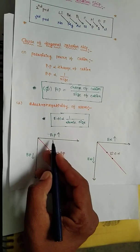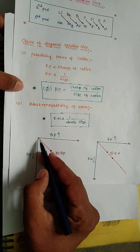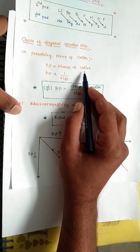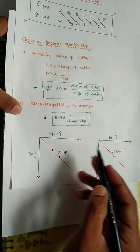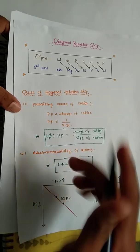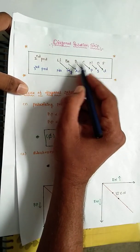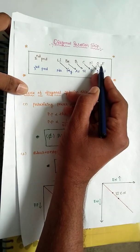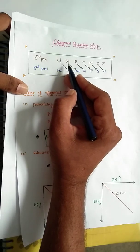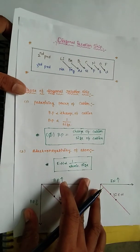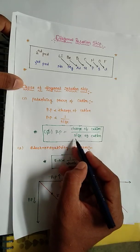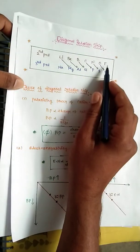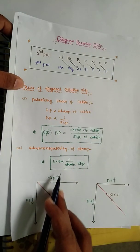In periods, moving left to right, the cation size decreases and the charge of the cation increases. Therefore, since polarizing power equals charge divided by size, as charge increases and size decreases going left to right across a period, the polarizing power of the cation increases.